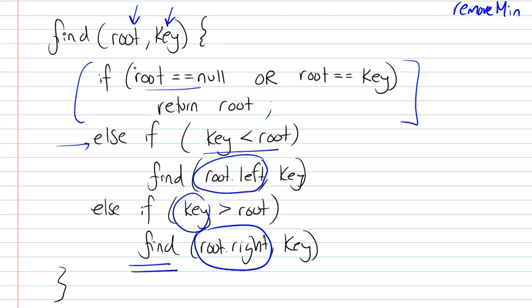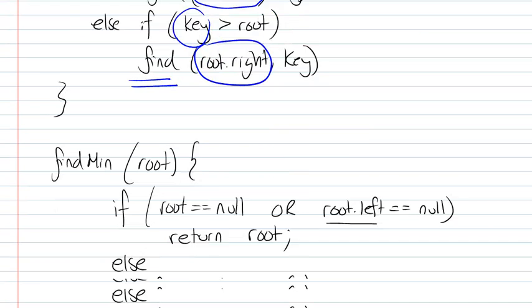If you reach a point where the root is equal to null, then the key was not found. Or if you get the root is equal to the key, then that was found, so you just return that root, whether it was found or not.